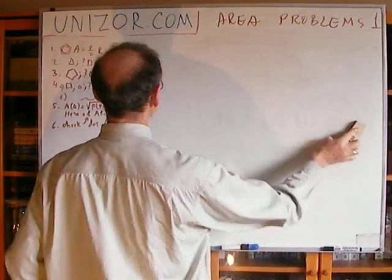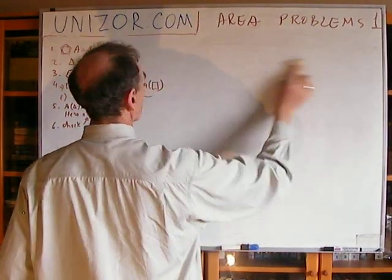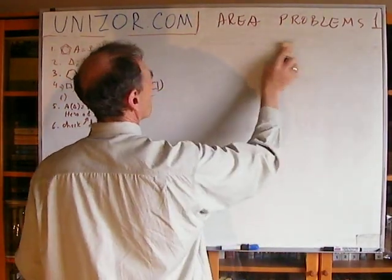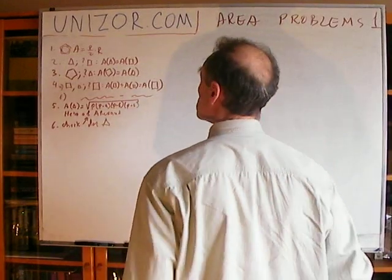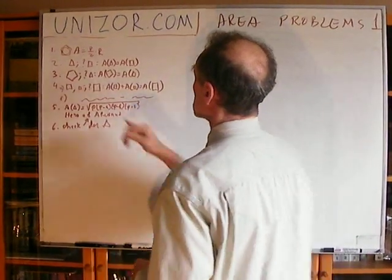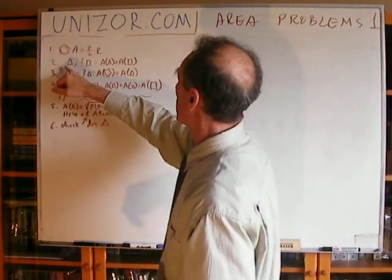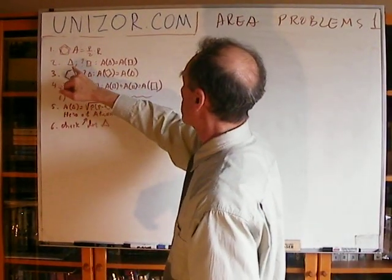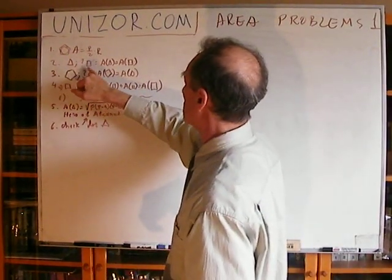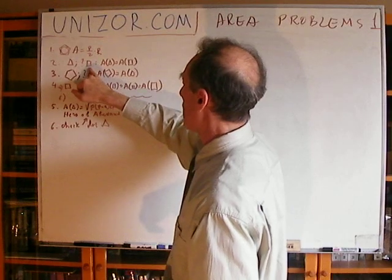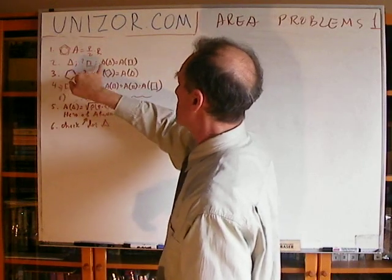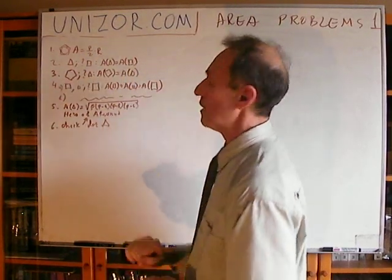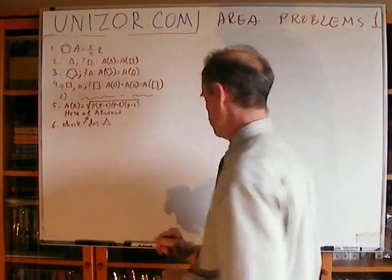Next problem, using my symbolism: given a triangle, we have to construct a square the area of which is equal to the area of the triangle.